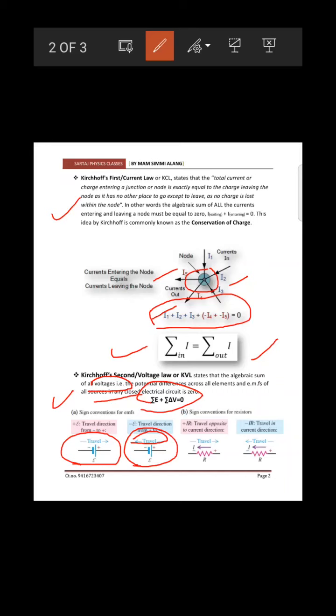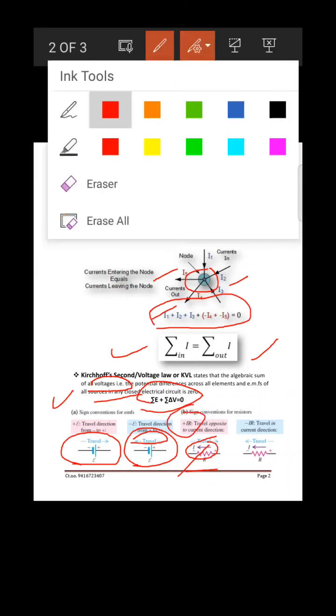For a resistor: if you move opposite to the direction of current through the resistance — for example, current flows right to left and you travel left to right — then the voltage drop IR across that resistance is taken as positive.